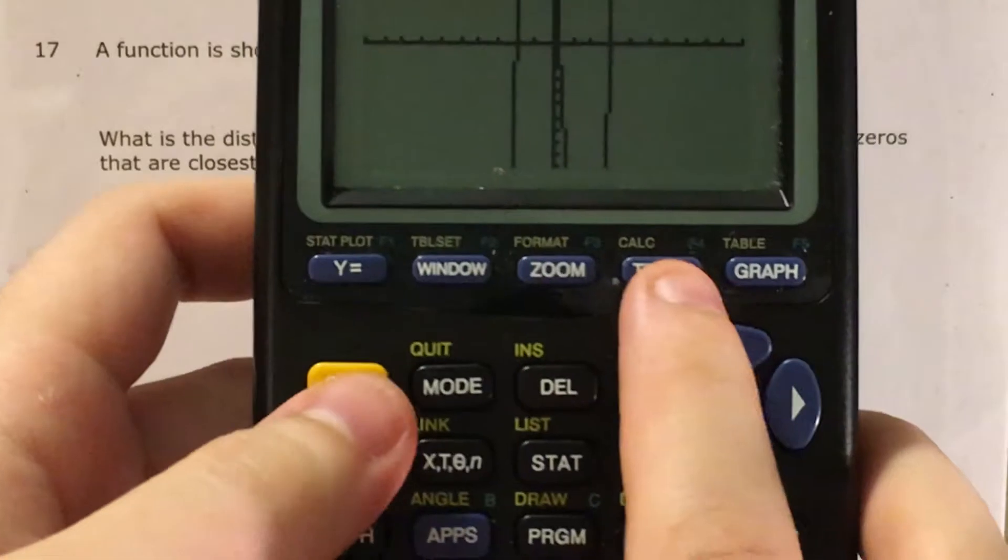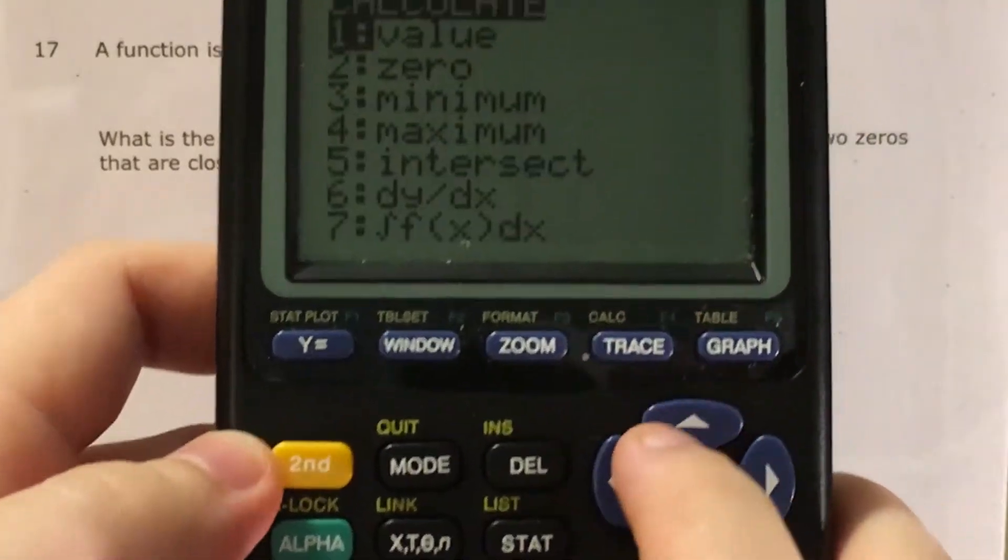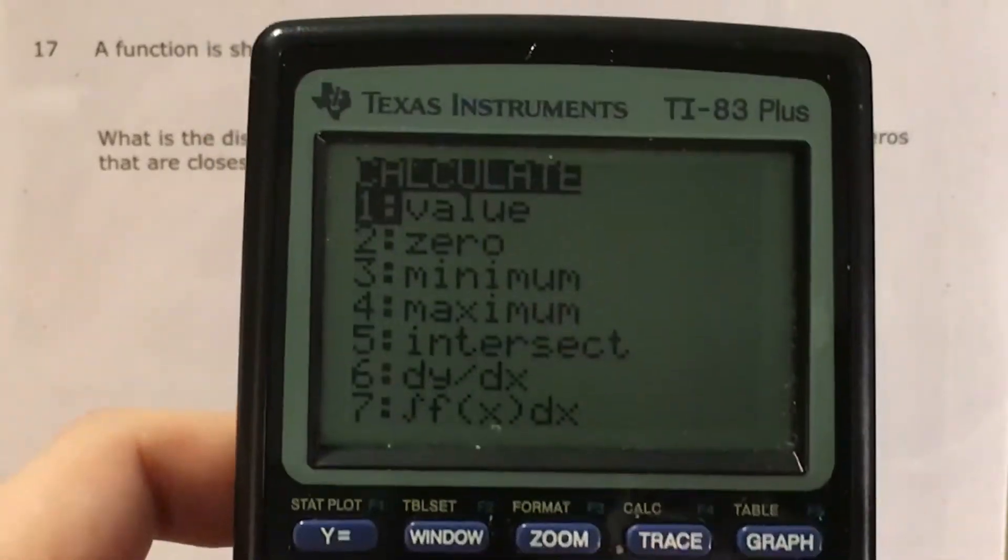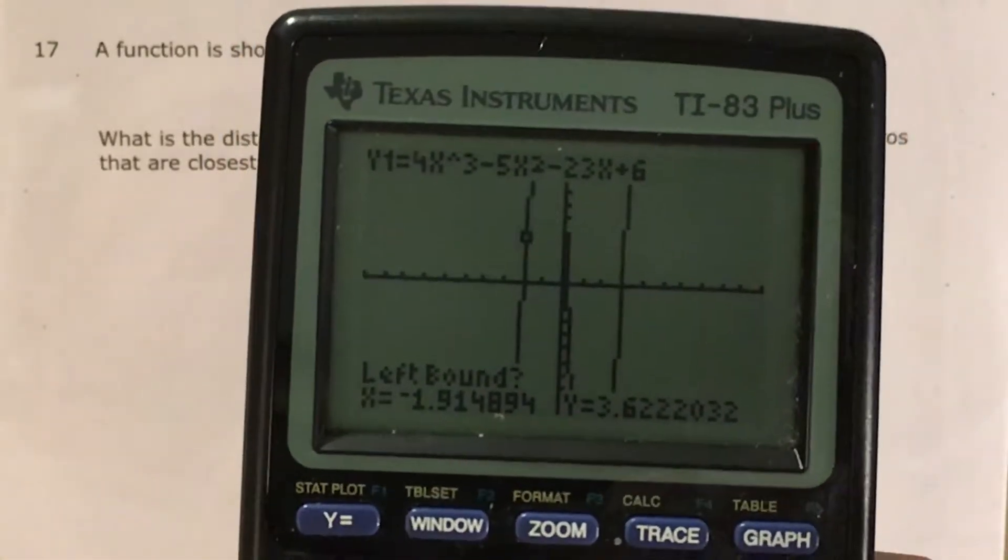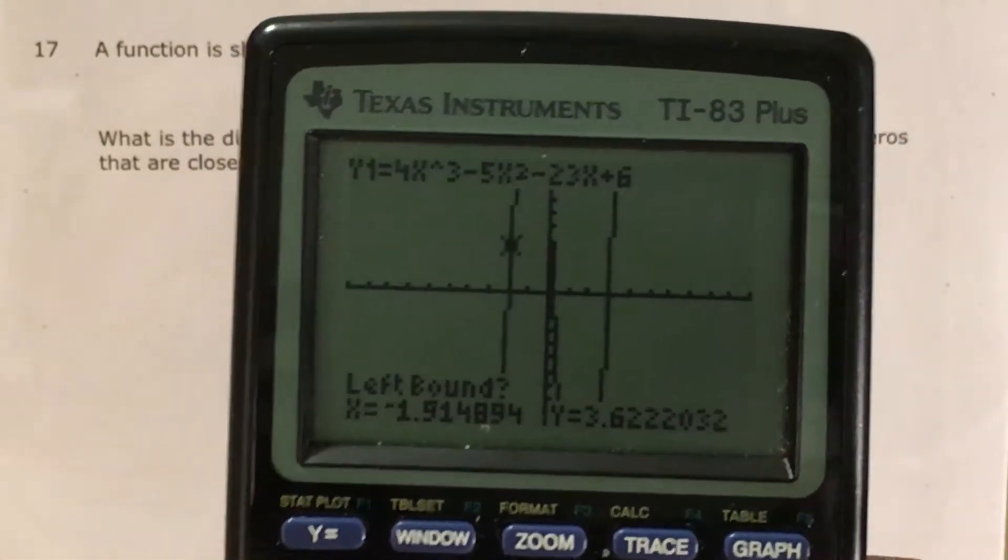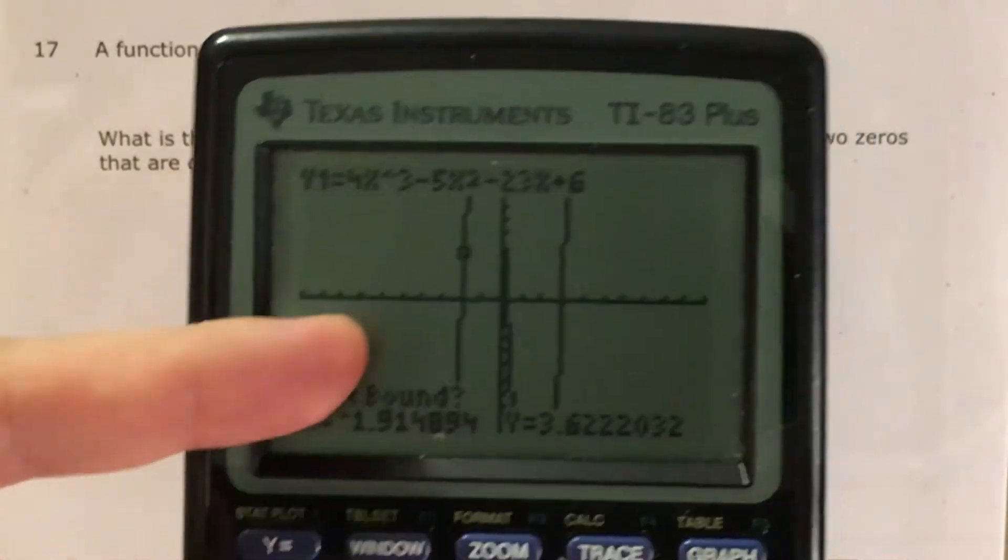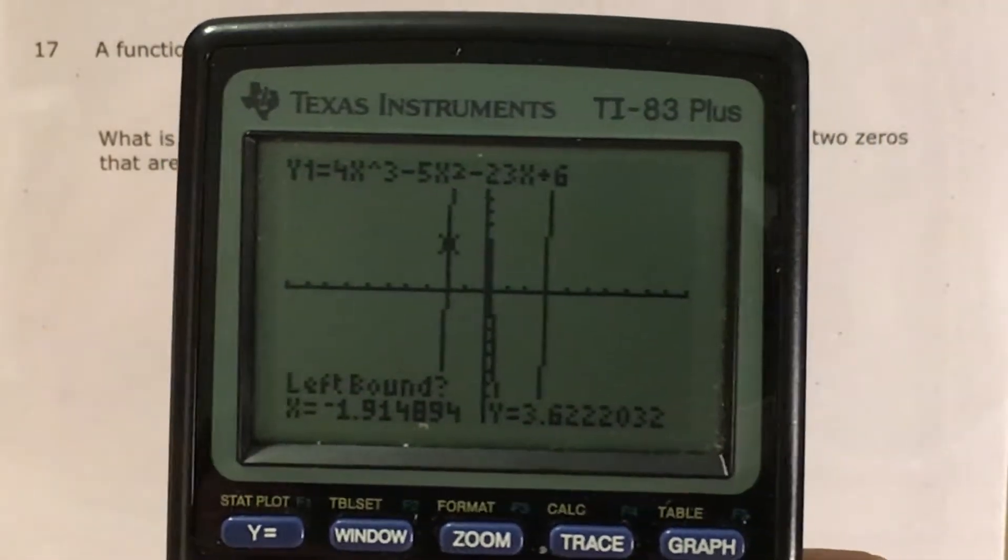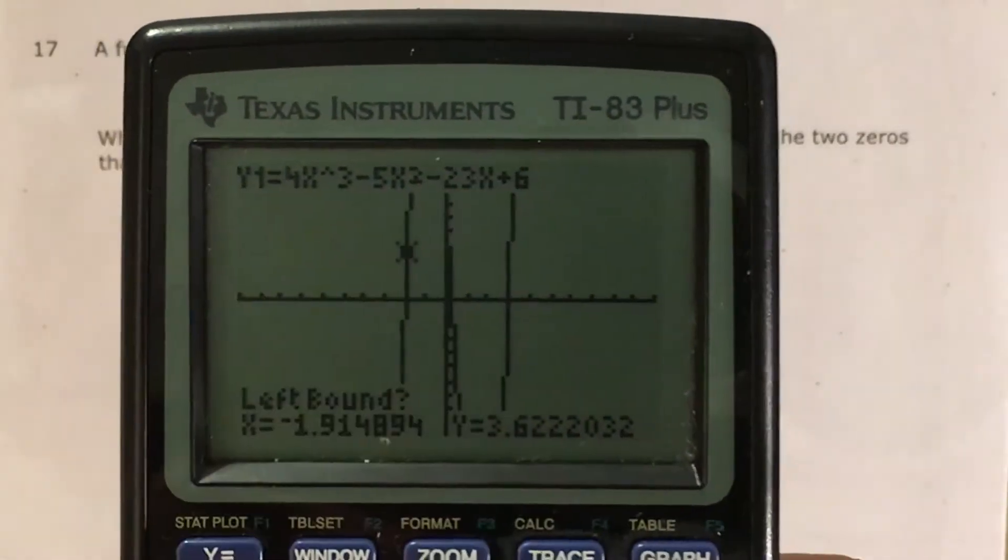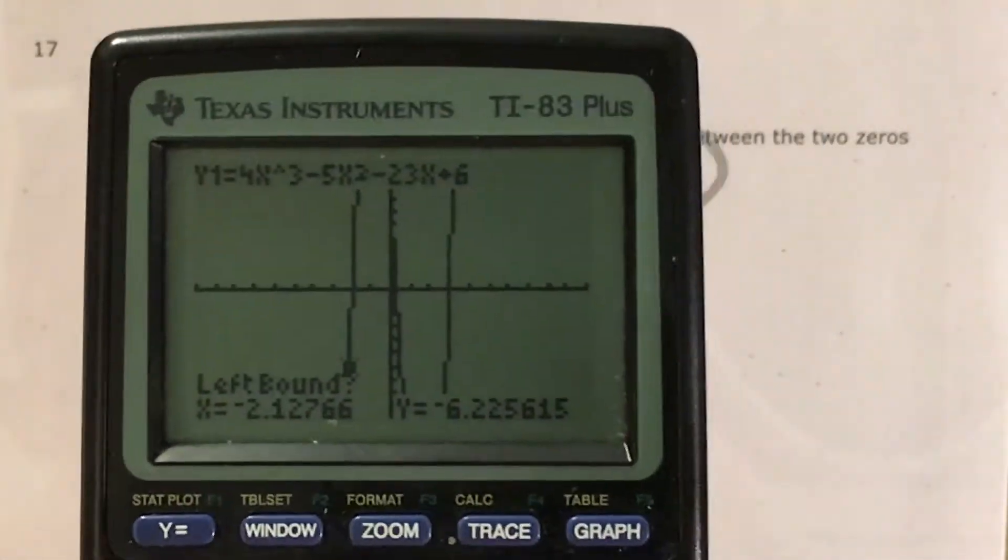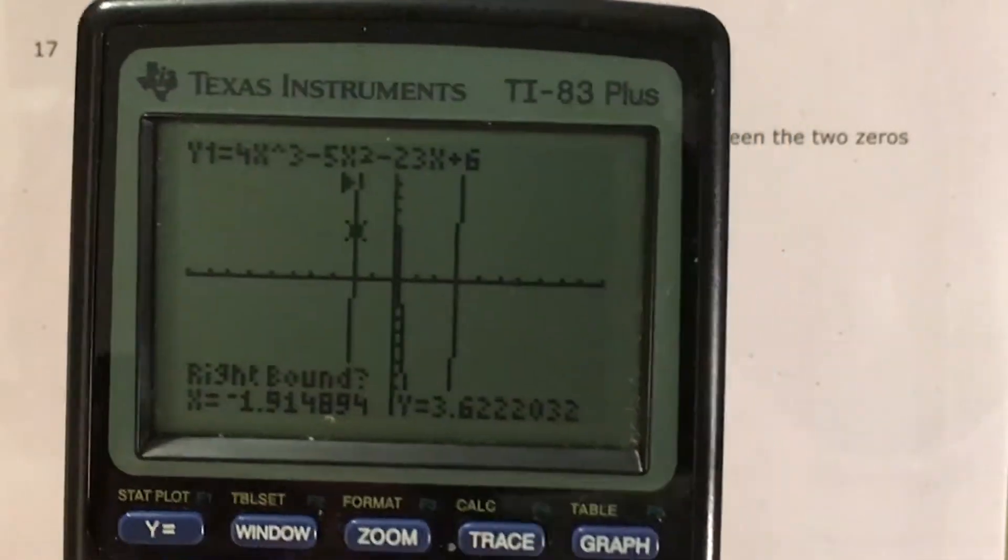I'm going to press second trace. Calc is written above it in yellow letters, which takes me to the calculate menu. I click zero. When trying to find one of my zeros, I need to look at which direction my graph is going up across the x-axis. Since it's kind of doing this, my left bound needs to be below the x-axis and my right bound needs to be above it.